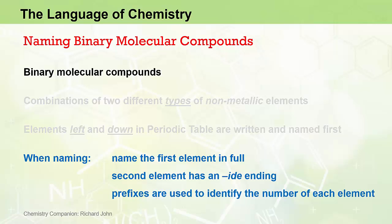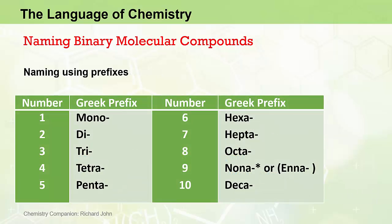When naming binary molecular compounds, we write the name of the first element in full. For the second element, we change its ending to an "-ide" ending, and we use prefixes to identify the number of each element present. The prefixes we use are generally Greek: mono for one, di for two, tri for three, tetra, penta, hexa, hepta, and so on.